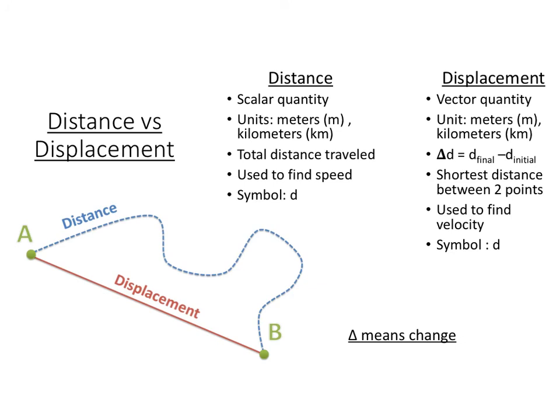All right, so let's look at distance versus displacement. Distance is the scalar quantity, which means the quantity that's just going to have a magnitude, no direction associated with it. Displacement is going to be the vector quantity, so it's going to have both a magnitude and a direction.